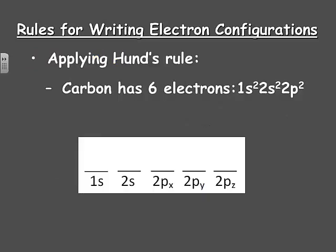Let's apply Hund's rule. Carbon has six electrons, written as 1S2, 2S2, 2P2. I put two arrows — one up, one down — at the 1S sublevel, then the next two at the 2S sublevel. But here's where people make mistakes: according to Hund's rule, we do not put two electrons one up, one down in the 2Px orbital. At the 2P level we have three equal-energy orbitals, so those two electrons must be split between two of them. I draw one up arrow in the 2Px and one up arrow in the 2Py. This gives the completed electron configuration for carbon.